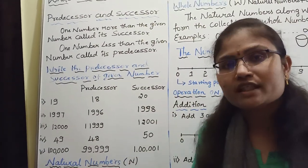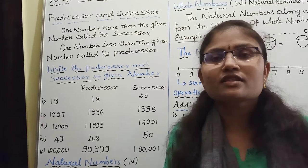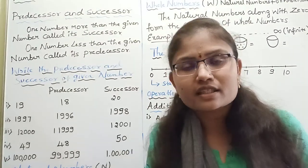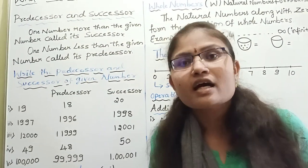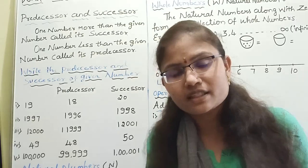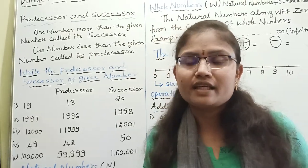Can you say the successor of 99? That is 100, and the producer of 99 is 98.